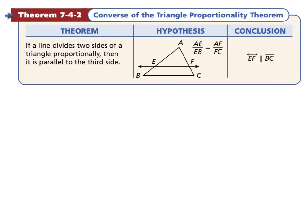The converse of the triangle proportionality theorem is just the opposite of what we just learned. If a line divides two sides of a triangle proportionally, then it's parallel to the third side. If the lengths of AE and EB are equal to the ratio of the lengths of AF and FC, then we know the line EF is parallel to the segment BC.